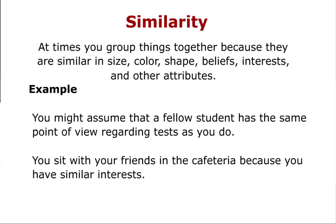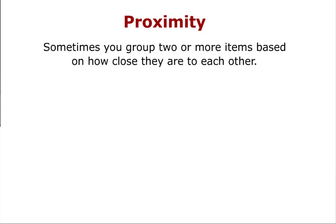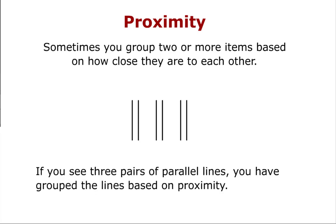And lastly, proximity, which is when you group two or more items based on how close they are to each other. If you see three pairs of parallel lines, you have grouped the lines based on proximity.